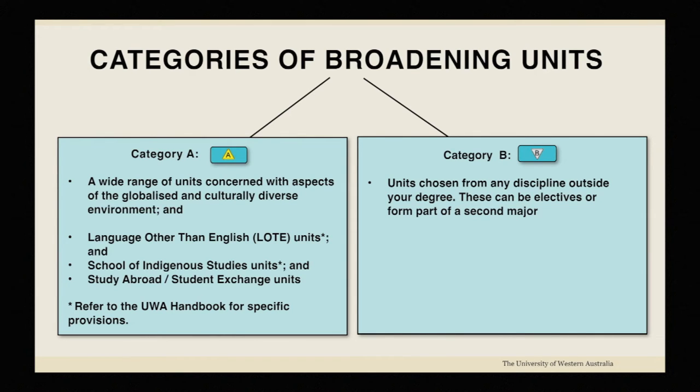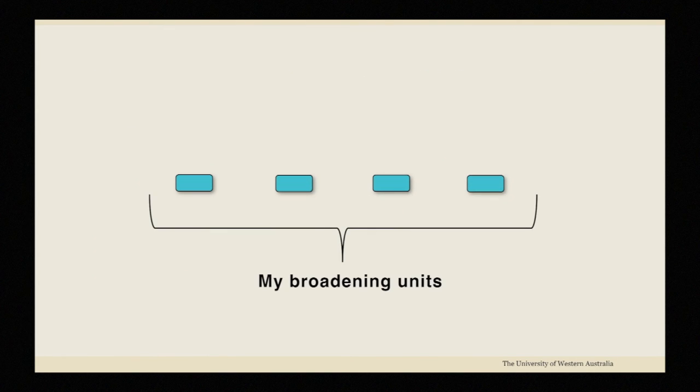You must pass at least four broadening units during your degree and at least one of them must be a category A unit. But you can do two or three or more if you like.